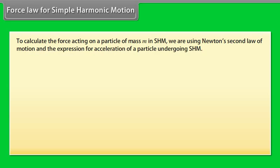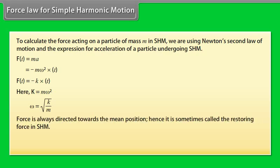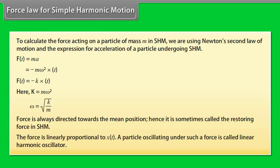Force law for simple harmonic motion: to calculate the force acting on a particle of mass m in SHM, we use Newton's second law. Using the expression for acceleration, F(t) = ma = −mω²x(t) = −kx(t), where k = mω² and ω = √(k/m). The force is always directed towards the mean position, so it is called the restoring force. The force is linearly proportional to x(t); a particle oscillating under such a force is called a linear harmonic oscillator.